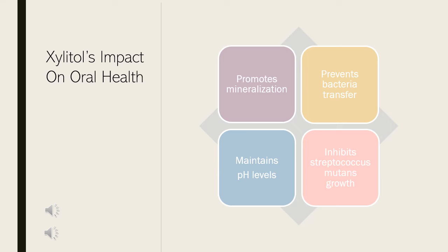Cavities and gum disease can be contagious. They can be passed on through sharing drinks, food, as well as kissing a loved one. Mothers can also pass it to their unborn child if they have poor oral hygiene. Xylitol has the ability to prevent the spread of cavities and gum disease because of the anticariogenic properties it possesses. It promotes good oral hygiene, but frequency of use is more beneficial than the quantity.